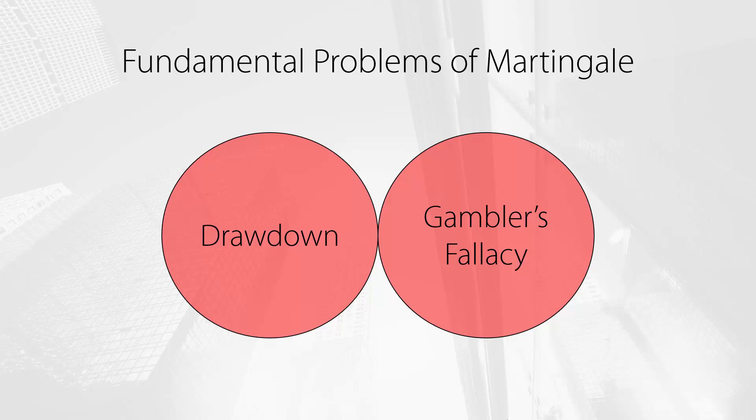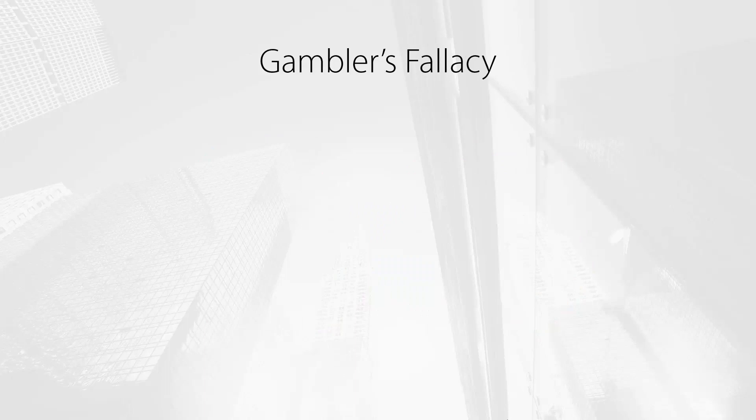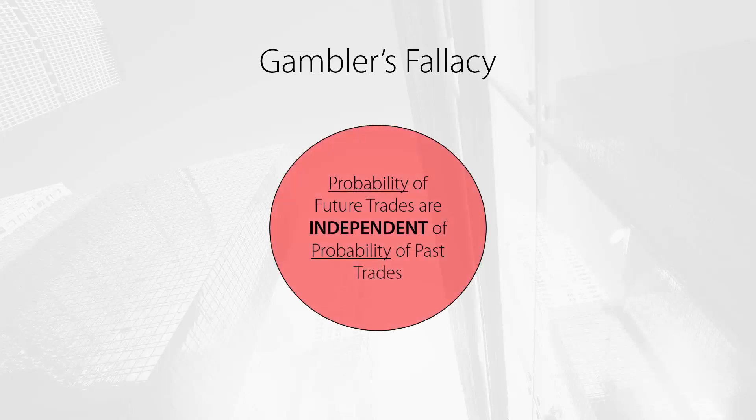The heart of the gambler's fallacy can be explained by the fact that the future outcomes of trades are independent of past trades. In other words, the probability of past trades have no influence on the probability of future trades. It's important to notice that past movements in price are correlated, but the probability associated with them is not.